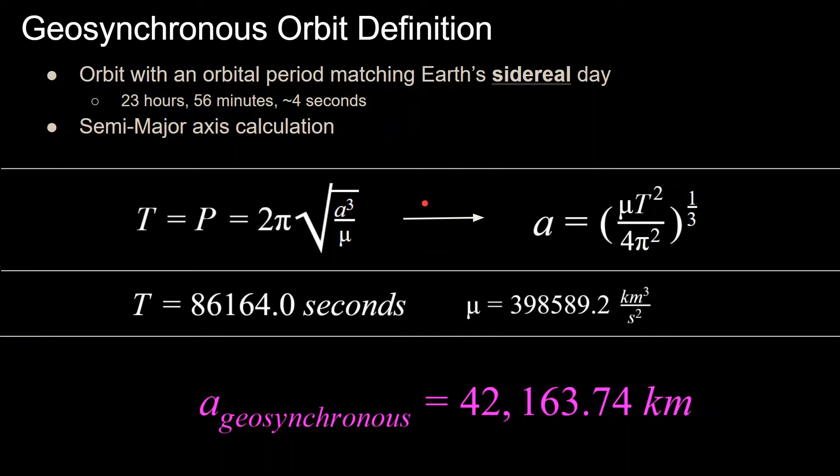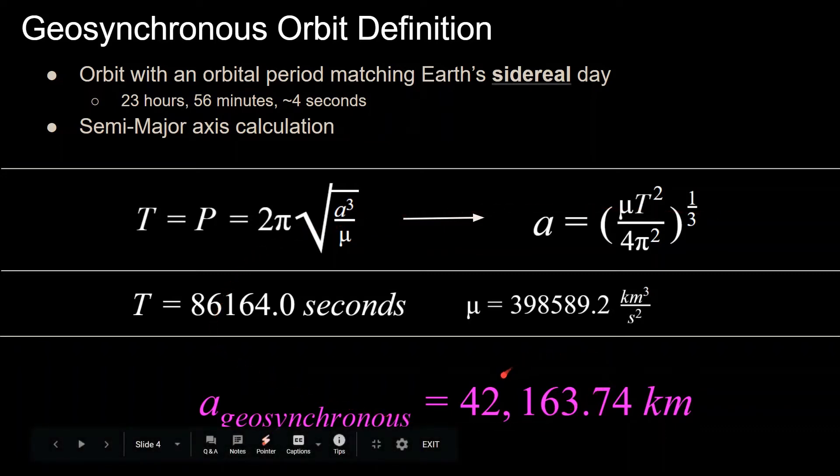Note that for each body in the solar system, they have a different angular velocity and gravitational parameter. But this equation applies to all of them, such as a Mars-synchronous orbit or a Moon-synchronous orbit. The semi-major axis is equal to (μT²/4π²)^(1/3), which is the cube root. Plugging in the period of the orbit and the Earth's gravitational parameter, we get that the semi-major axis for a geosynchronous orbit is equal to 42,163.74 kilometers.